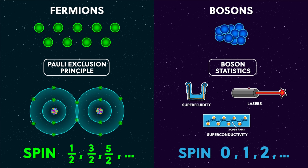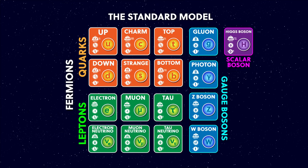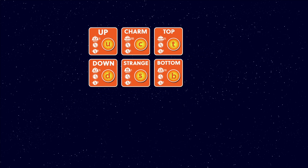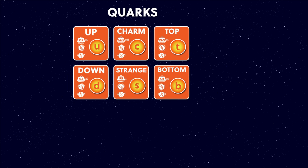That covers the consequences of spin. Now let's take a closer look at the spin half particles — the fermions. You'll notice that the fermions are also split into the quarks and the leptons. We'll look at the quarks first. A single quark can't ever exist on its own — quarks are always found bundled together.